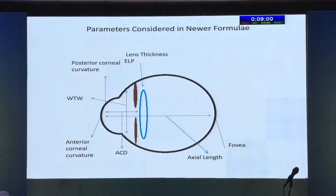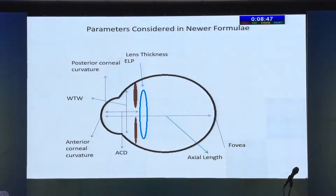The newer formulae look at multiple things: anterior curvature, posterior curvature, anterior chamber depth, lens thickness, axial length, and white-to-white. The newer fourth-generation formulae are mixed formulae — a theoretical formula combined with regression. This recreates a structure of the eye and tries to tell you where a lens is going to sit in that particular eye, which is far more accurate, and that is why the results are much better.